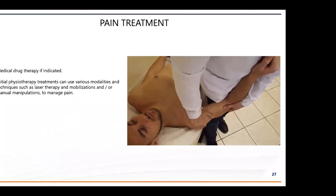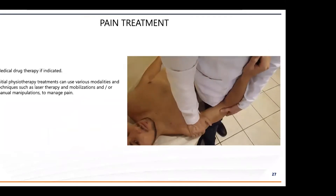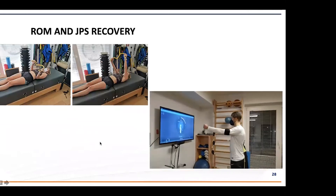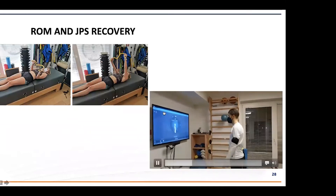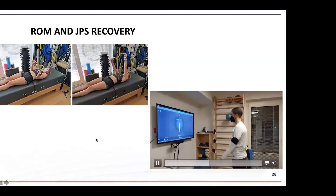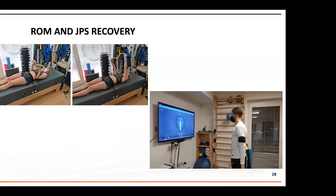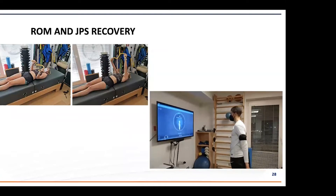For pain treatment, manual therapy is very important for pain modulation. We then progressively increase the range of motion of our athlete, and at the same time we can do joint position sense recovery. This is an important exercise in which our athlete receives visual and sound feedback — very important because we work with the brain, not only the muscles. This type of neuromuscular stimulation is key.